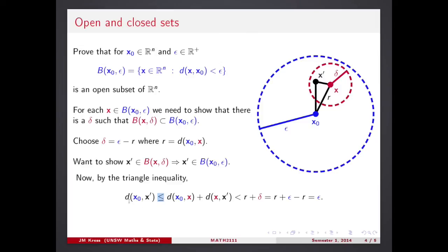By triangle inequality, I can estimate this distance by combination of these two distances, from x naught to x and from x to x dash. Each of them individually, we have some control for them. For instance, from x naught to x, it's the r distance. Here it is.